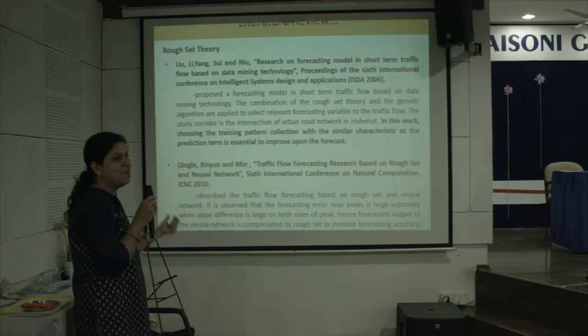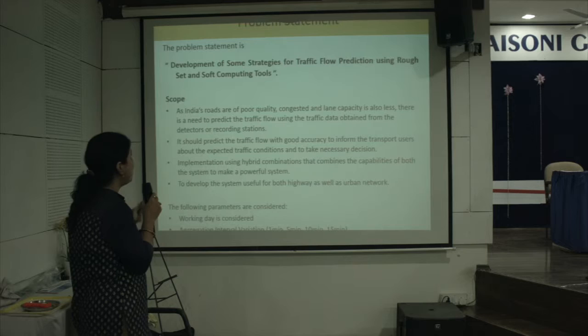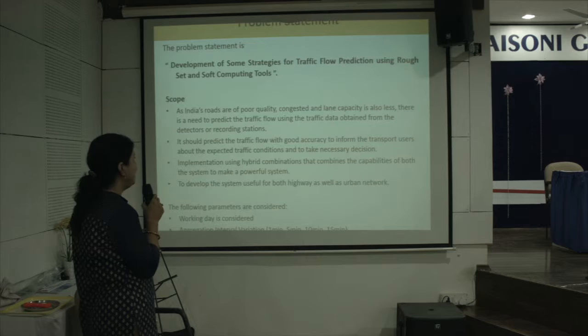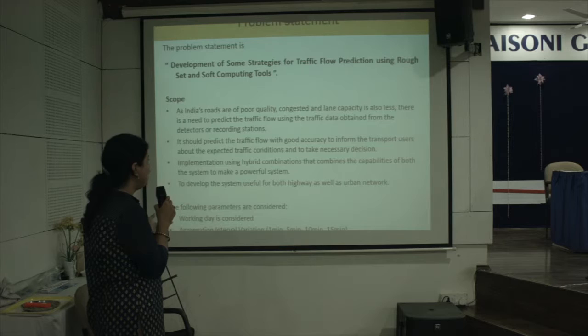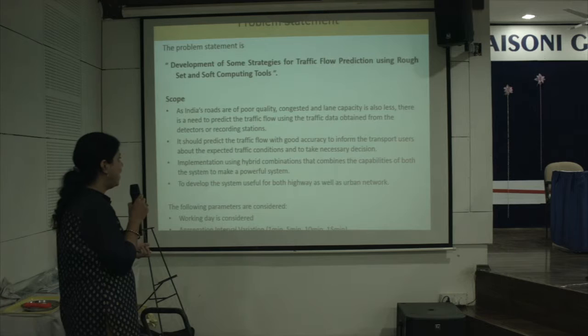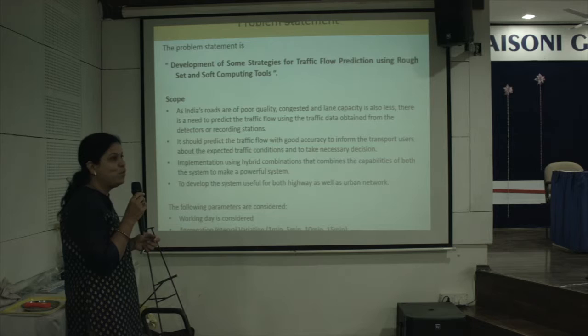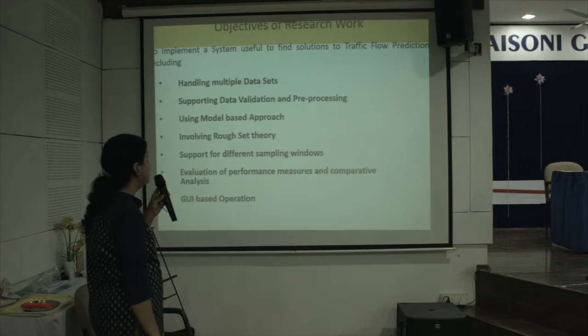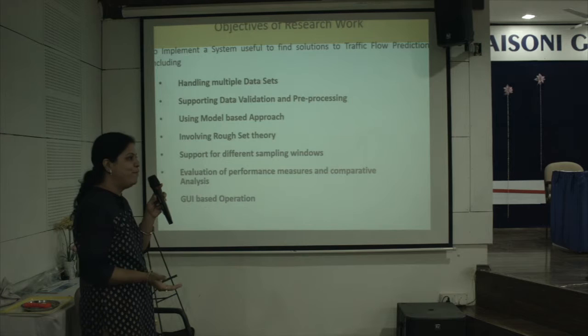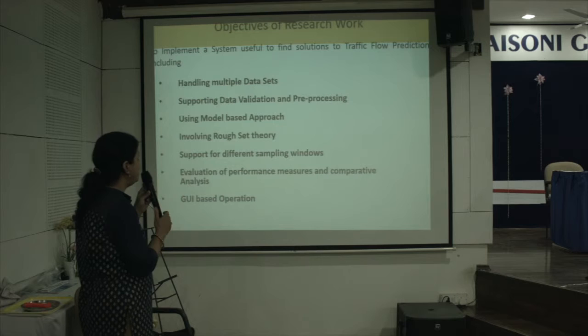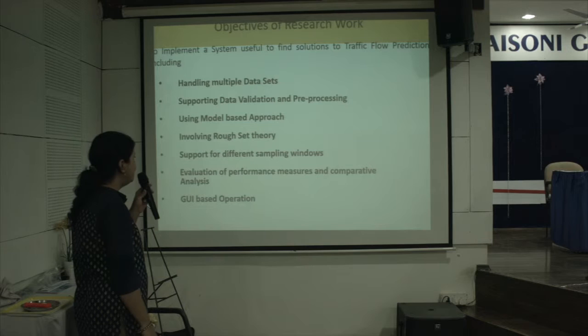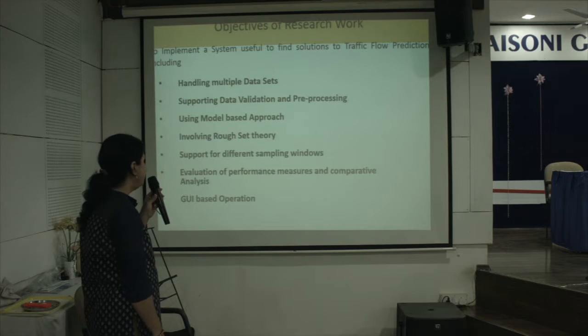After the literature review, the problem statement is the development of strategies for traffic flow prediction using rough set and soft computing. The scope requires a traffic flow prediction system using traffic data from detectors and recording stations, capable of predicting traffic flow with good accuracy through a hybrid combination, applicable for both highway and urban networks. The research objectives include handling multiple data sets, supporting data validation, pre-processing using a model-based approach involving rough set theory, support for different sampling windows, evaluation of performance measures, and geo-based operations.